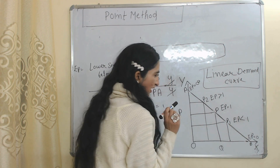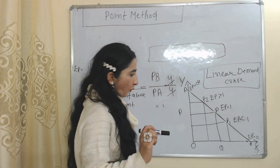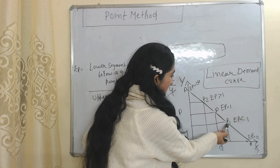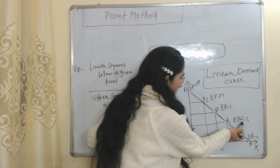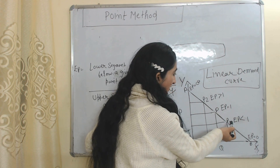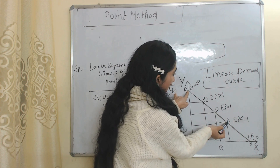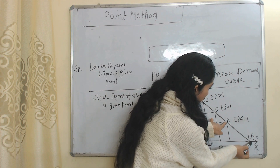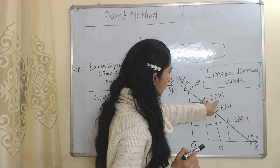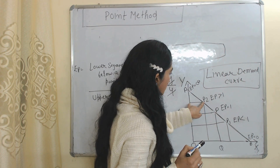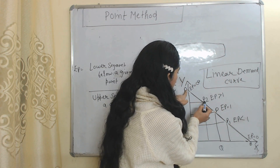Now we will see price elasticity at all points on this linear demand curve. At point C, price elasticity is equal to 1 as already discussed. At point P1, price elasticity is less than 1 because the upper segment P1A is greater than the lower segment P1B. At point P2, price elasticity is greater than 1 because the lower segment P2B is greater than the upper segment P2A.